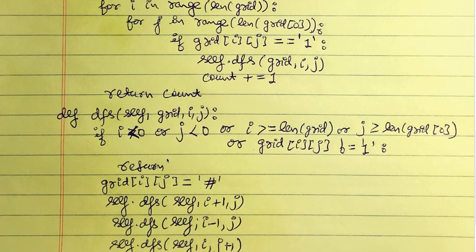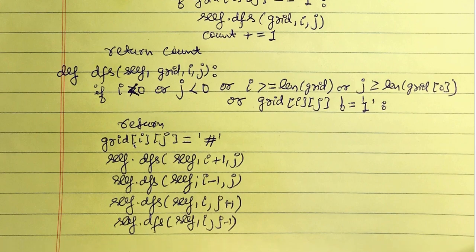In the DFS function, we first check if i and j are out of bounds — that is, if they are negative or greater than the length of the grid — or if the grid value is not equal to one. In any of those cases we return and do nothing.